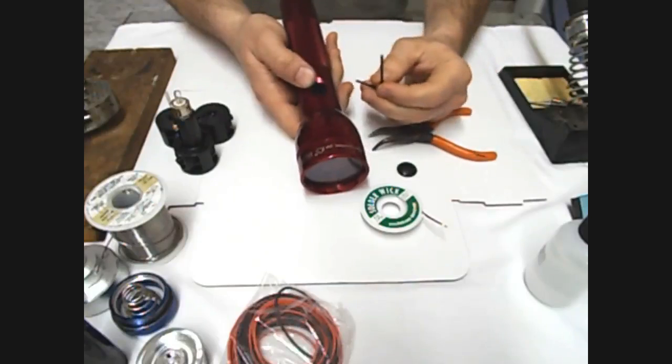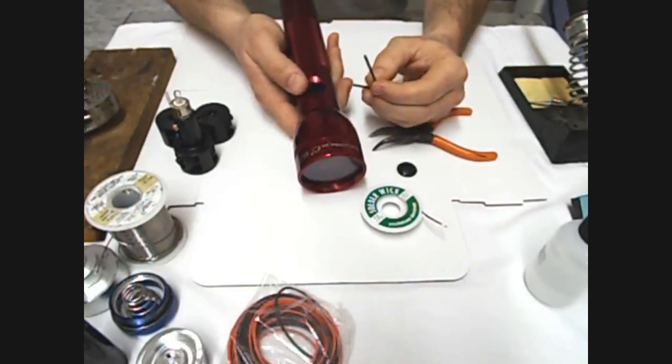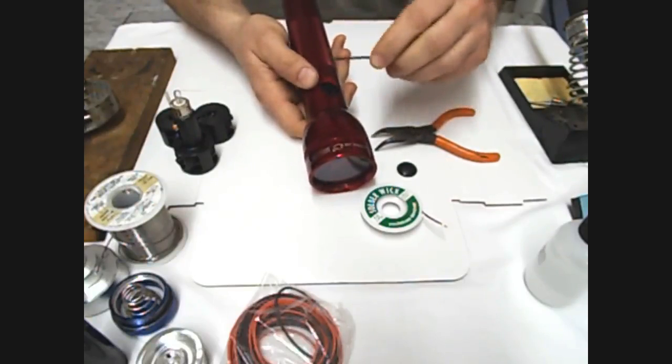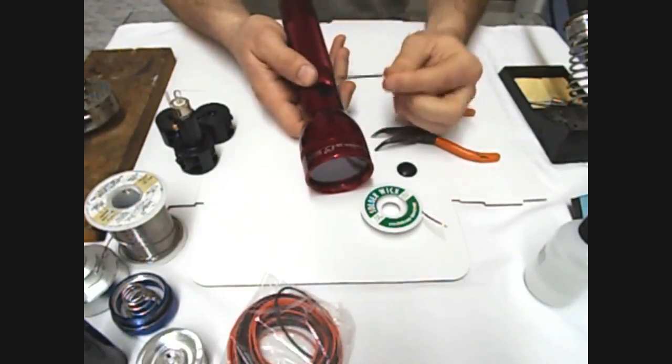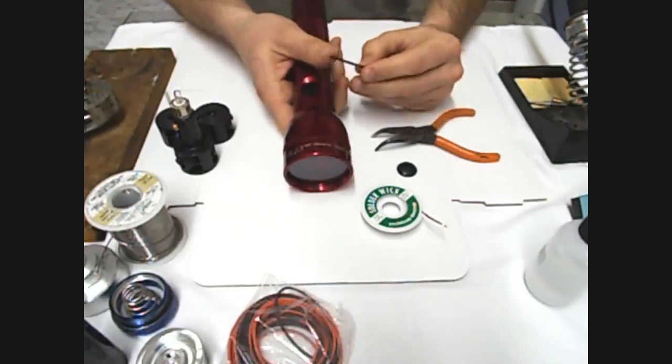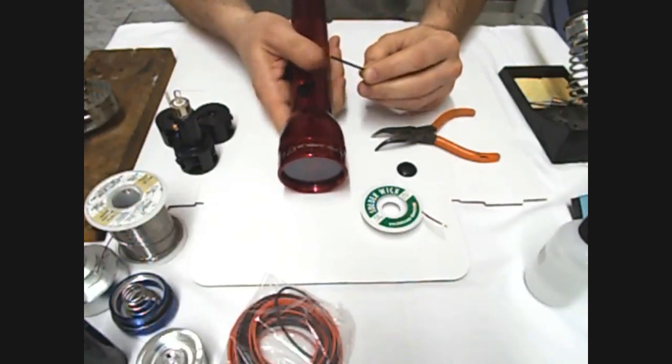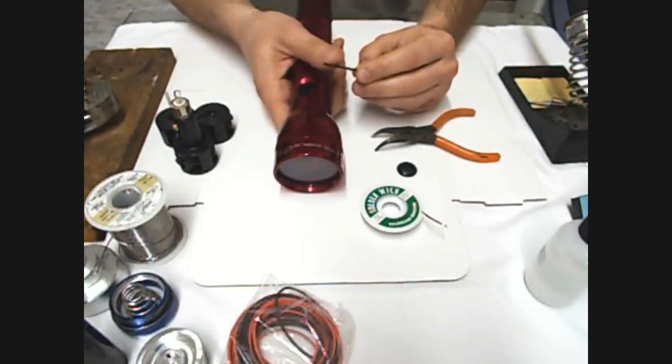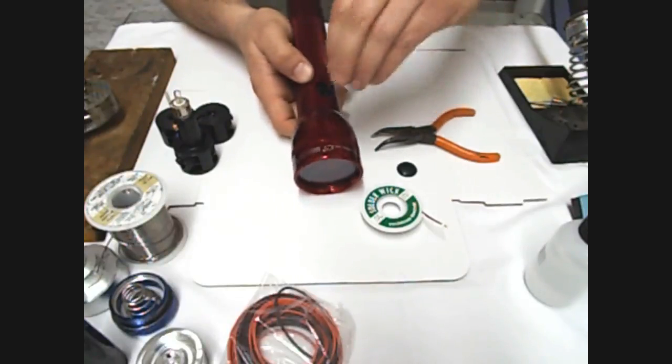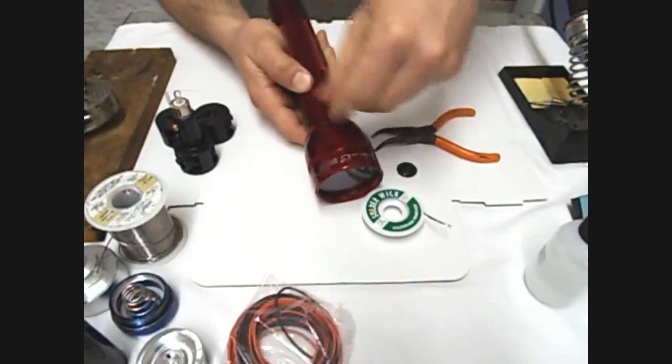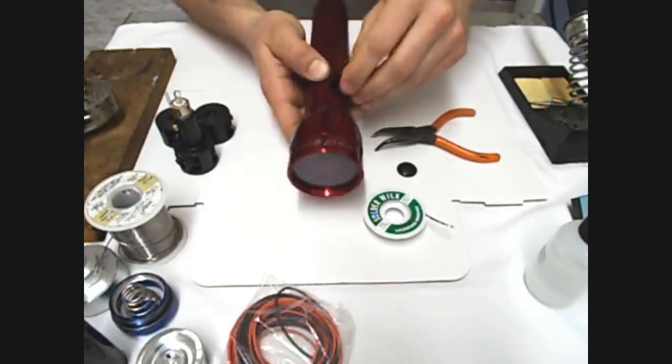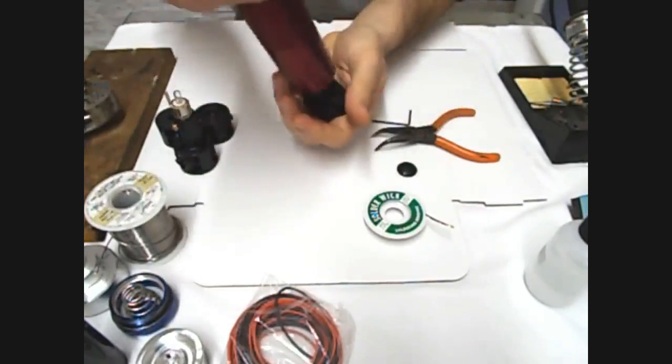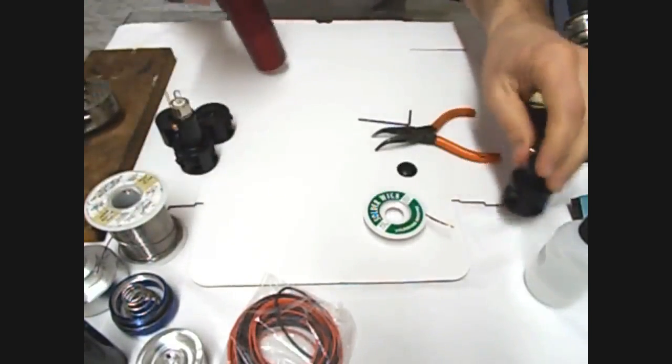Take your hex key. This is actually not a hex key. It's a T8 Torx bit and finding them that will fit in here is kind of tough so I do have some available on the website or you can just go get a multi-tool set and grind the shaft down a little bit. So crack that loose and give it a couple of spins until it's free and just drop it on out the bottom and you're all set.